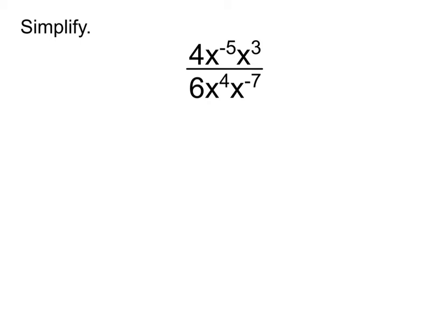Option one that I see a lot of people use on this is that they will add the exponents on the top and add the exponents on the bottom first. So that would give you 4x to the negative 2 over 6x to the negative 3. And if you start there, that's fine.